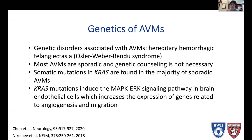Very recently, with advances in genetics, it has been found that somatic mutations are responsible — or at least present — in the majority of AVMs, particularly somatic mutations in KRAS. KRAS mutations induce the MAP kinase ERK signaling pathway in brain endothelial cells, which eventually leads to angiogenesis and migration of endothelial cells. This is thought to contribute to the pathogenesis of AVMs, though there are still many unknowns about how and why AVMs form.